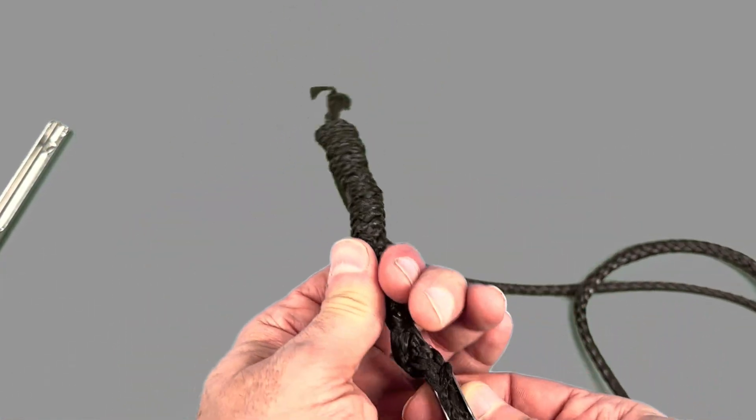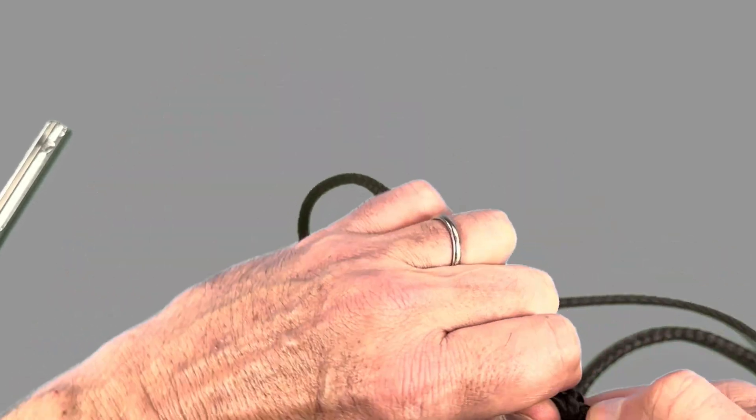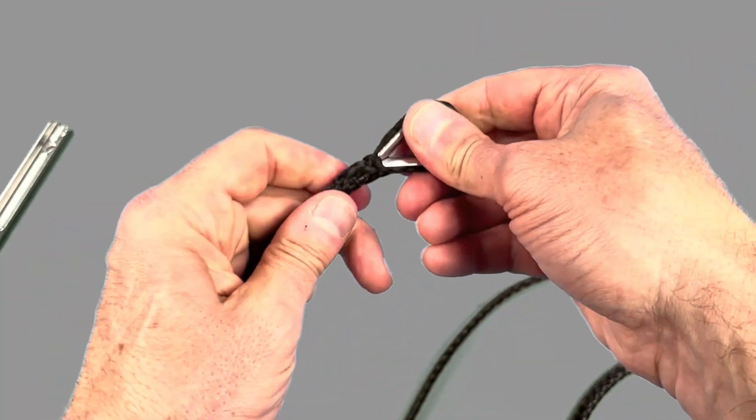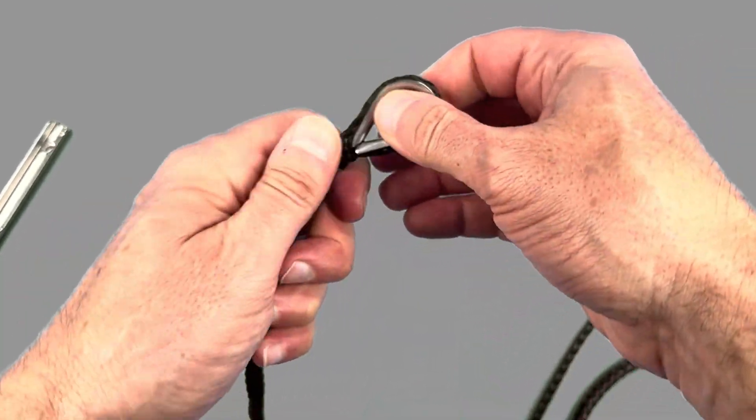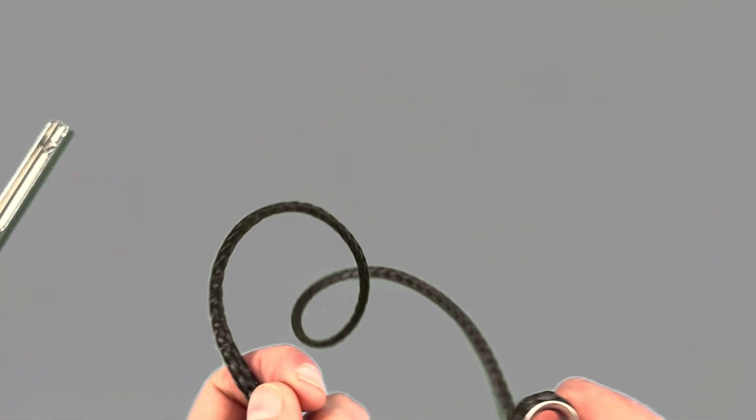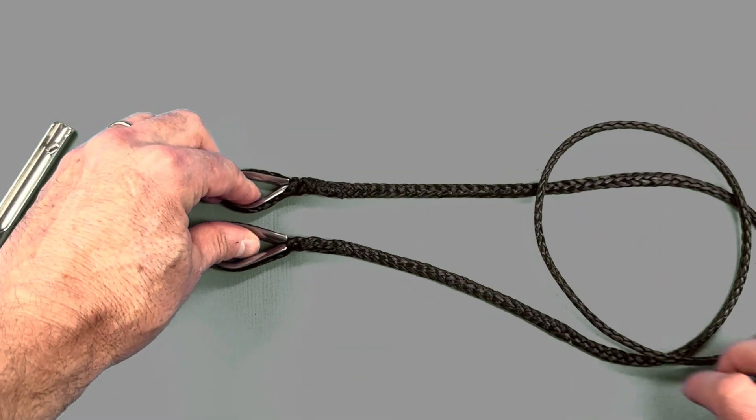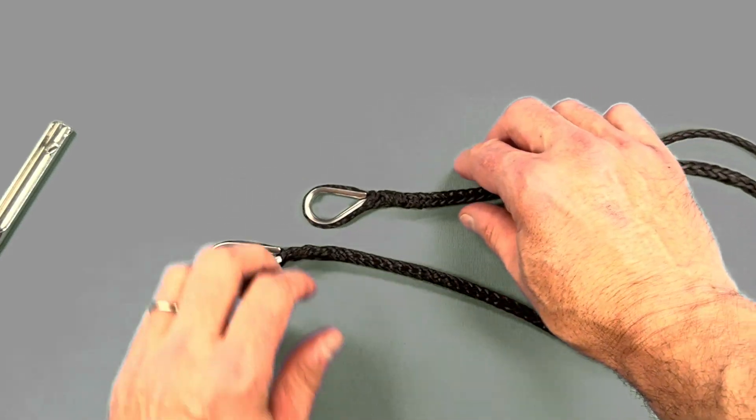And there you have our second thimble eye splice, this time completed with one end fixed and the first completed without it.